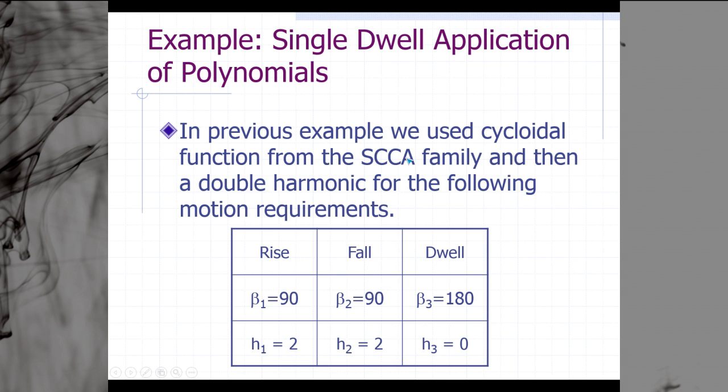We're going to begin by picking up an example that we started previously, where we're doing a single dwell polynomial CAM design. In the previous example we did, we used the cycloidal function from the SCCA family, and then we even tried a double harmonic for the following motion requirements. We had a rise, fall, dwell. The rise happened in 90 degrees of CAM rotation, and we rose from zero to a height of two inches. Our fall happened in another 90 degrees, and we fell two inches back down to zero.